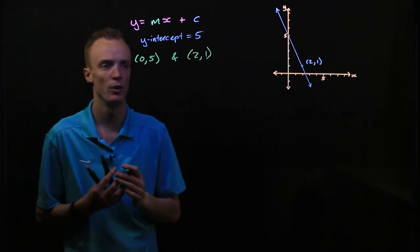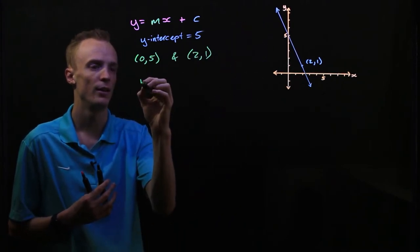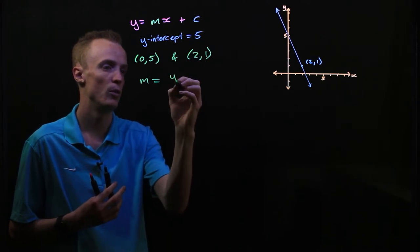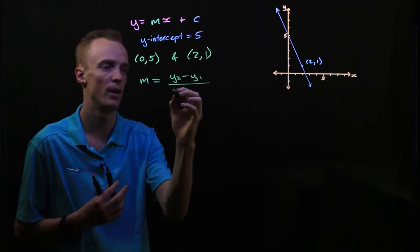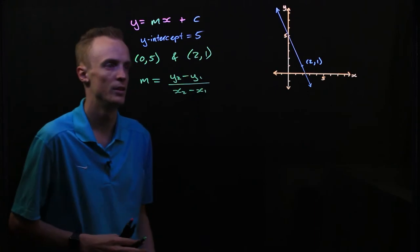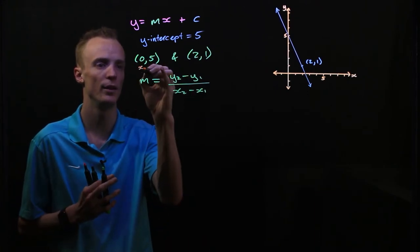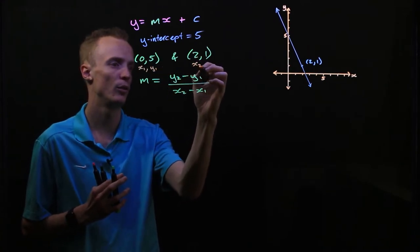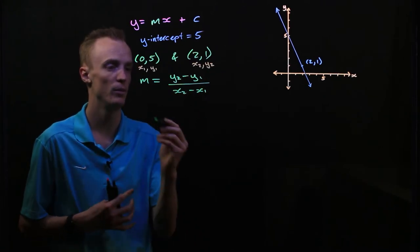We can use our slope formula now to find the gradient of this linear line. Our slope formula says that it's equal to y2 take y1, or the rise, divided by the run of x2 take x1. So I'll label this x1, y1 and this x2, y2, and I can substitute these values into my formula.